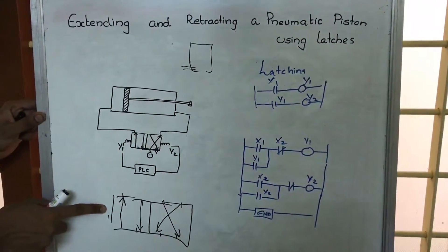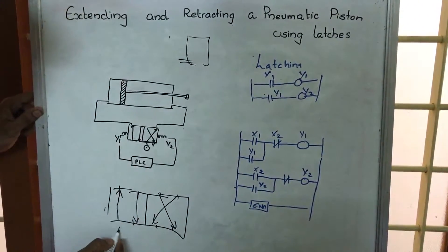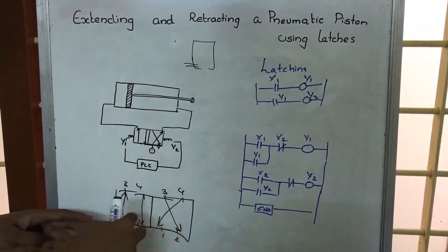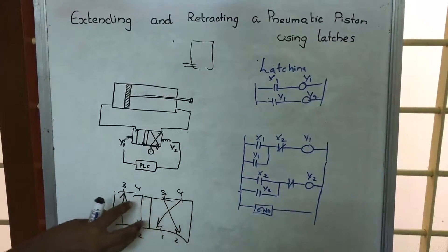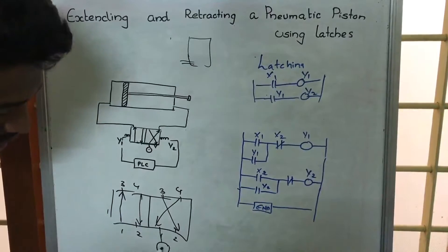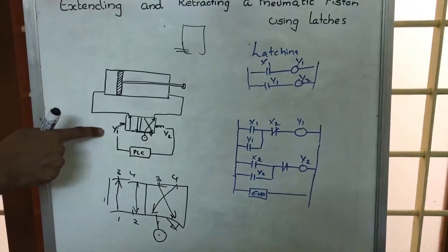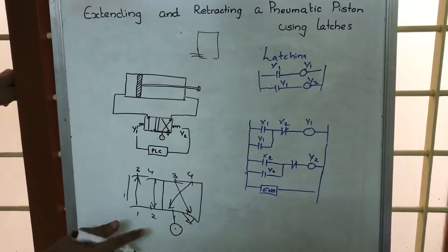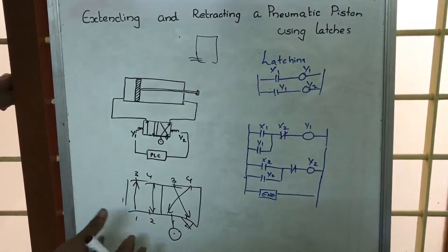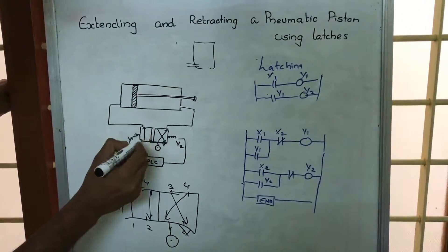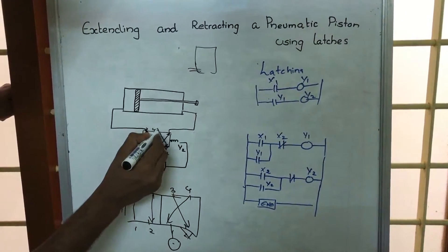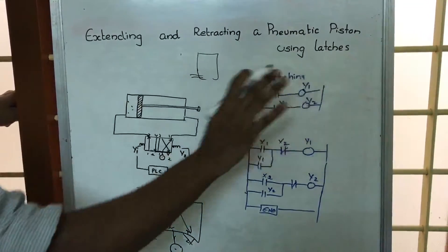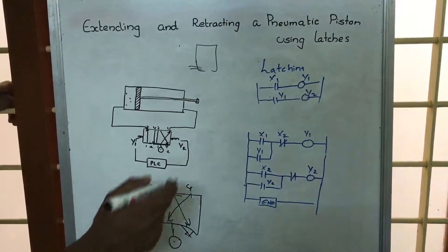Numbering the ports one through four: port one is connected to the pressure source, and port two is connected to exhaust (wind). When input y1 is given, this state is energized — ports one and three connect. Since port one has the pressurized air source, pressurized air passes from port one to port three, pushing the piston to the right-hand side.